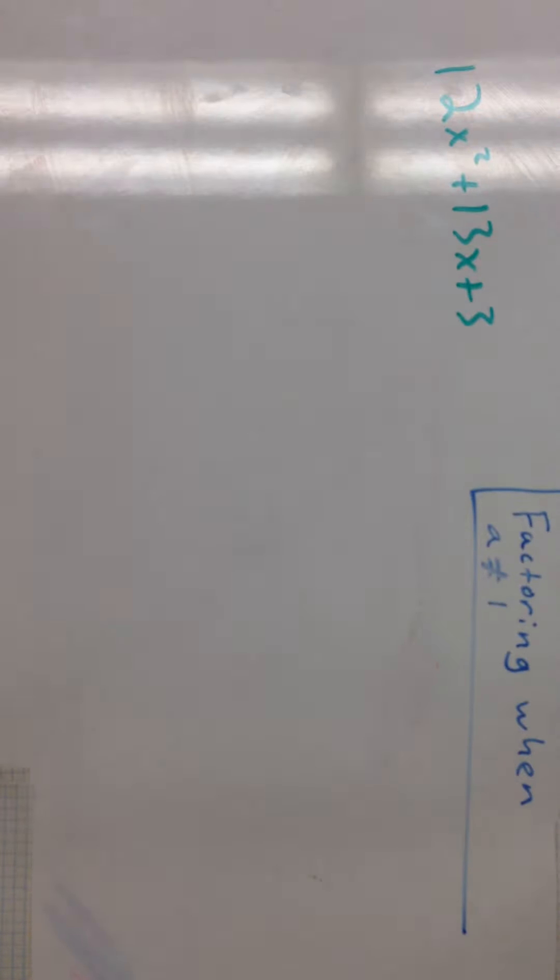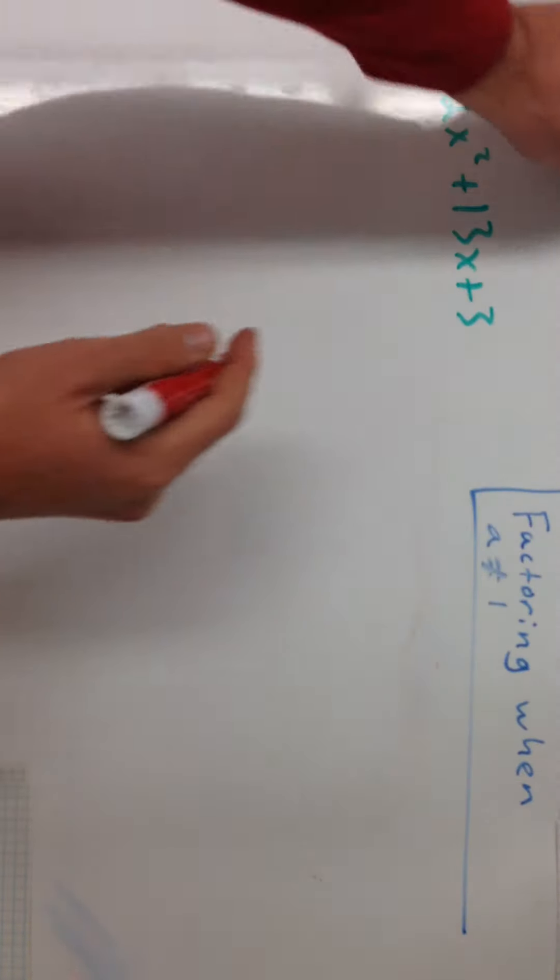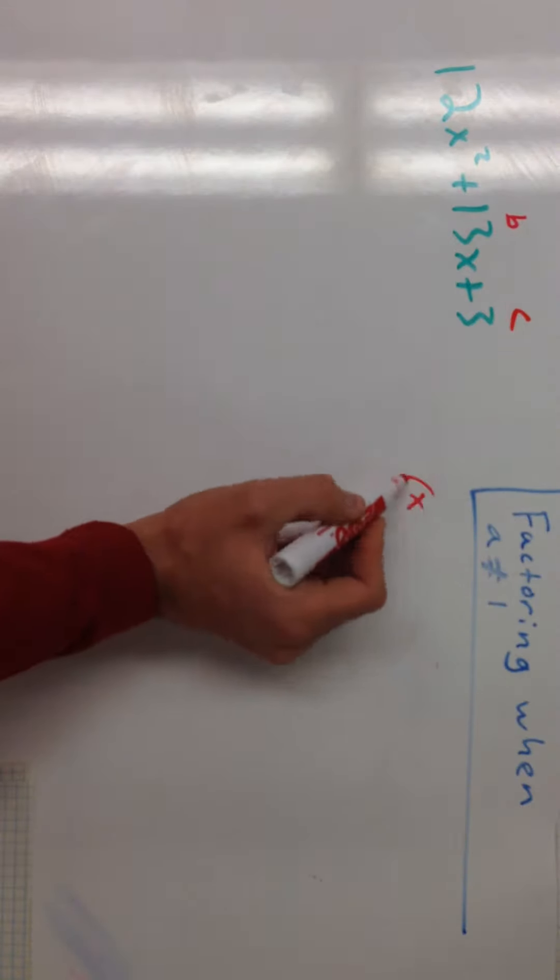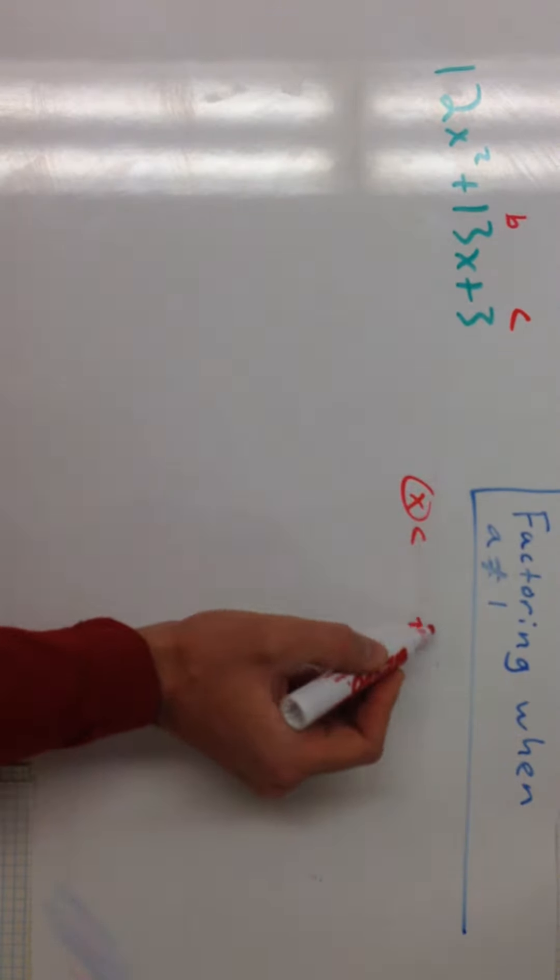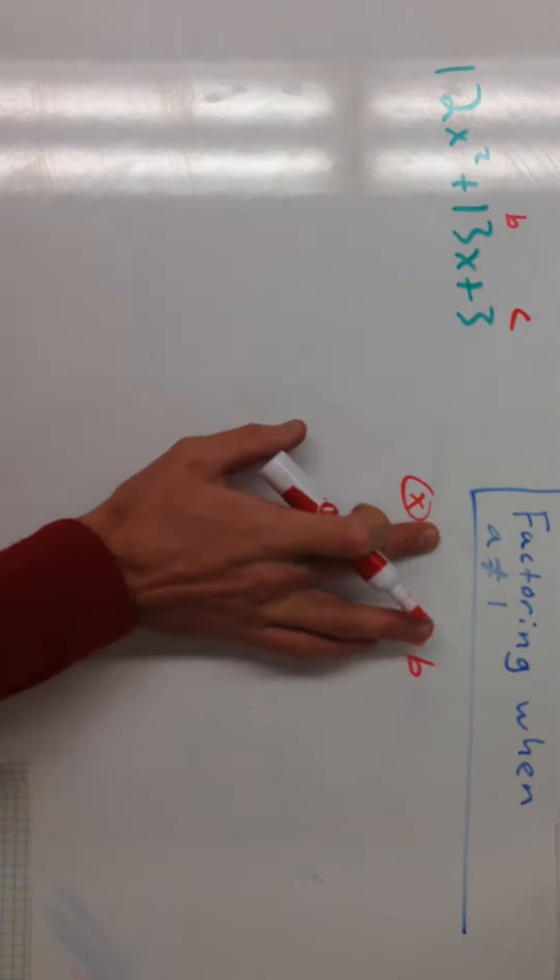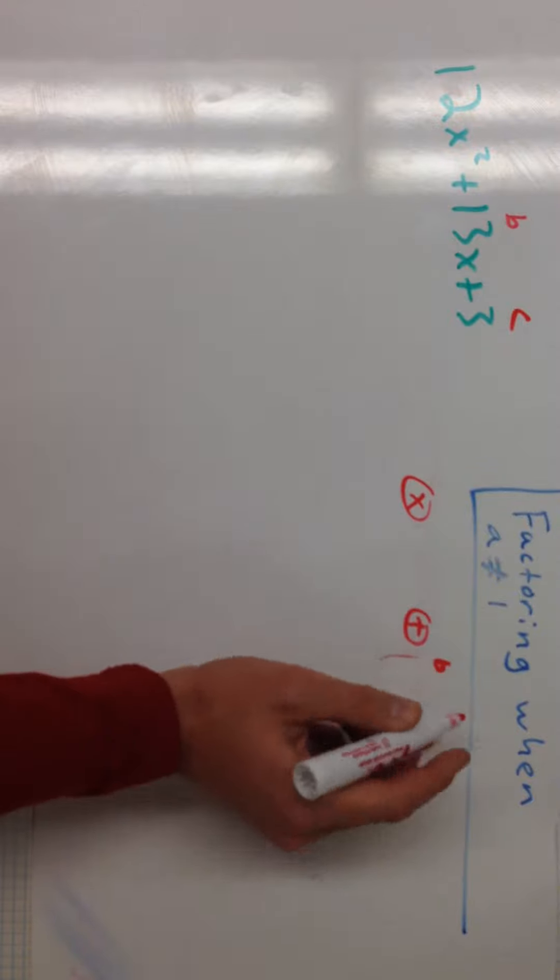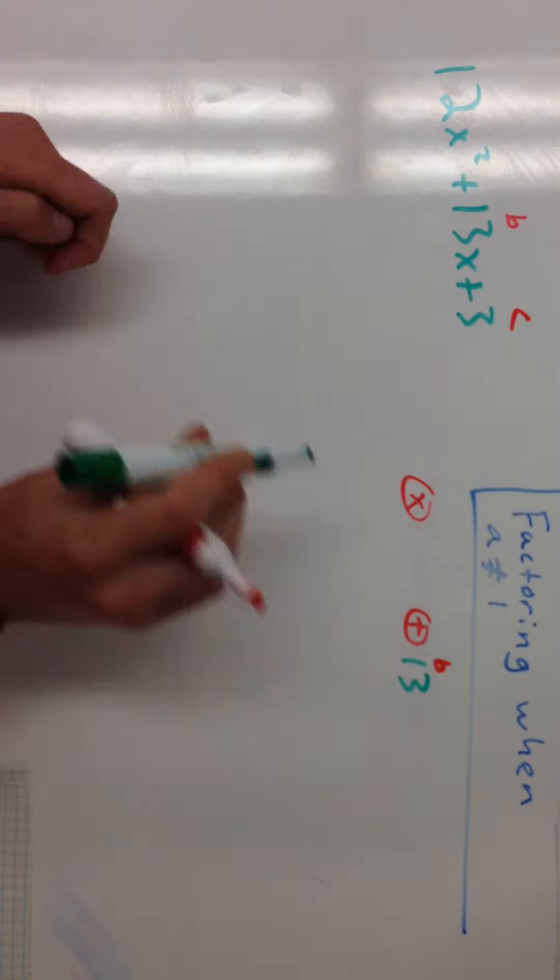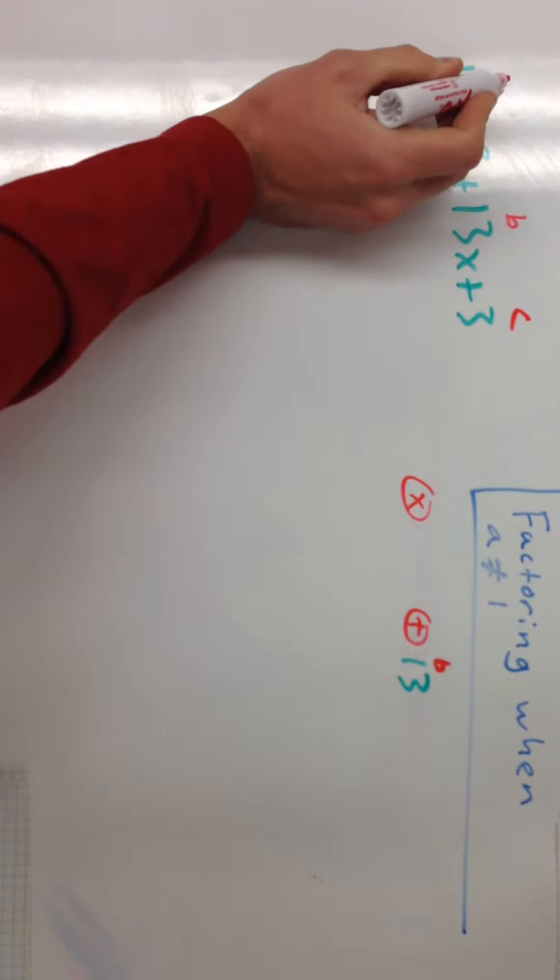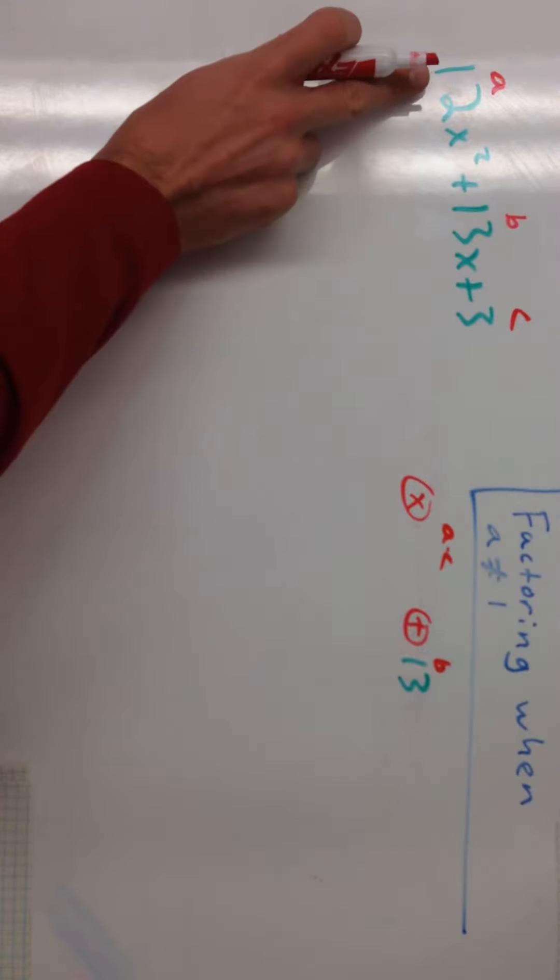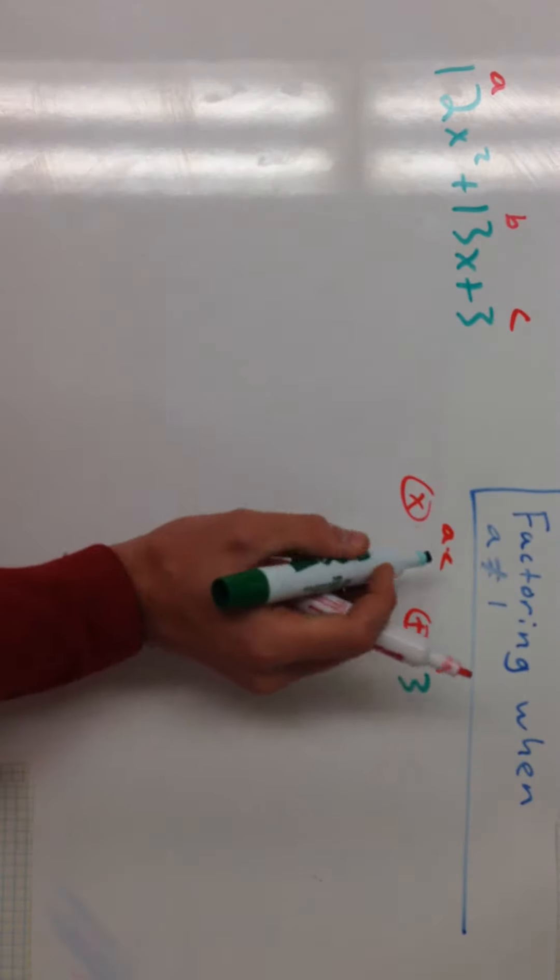So what I want to do in this problem is, you know how before we wanted things that multiplied to C, and they needed to add up to our B value? Well, in this problem, we're just going to change that a little bit. We want things that still add up to B. So we want them to add up to 13. But what we want is things that multiply to A times C. So that's 12 times 3, which is 36.